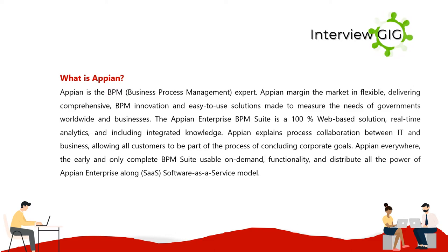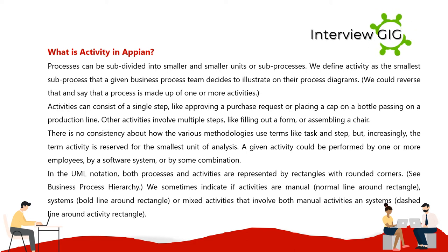What is an activity in Appian? Processes can be subdivided into smaller units or sub-processes. We define an activity as the smallest sub-process that a given business process team decides to illustrate on their process diagrams. A process is made up of one or more activities. Activities can consist of a single step, like approving a purchase request or placing a cap on a bottle on a production line.